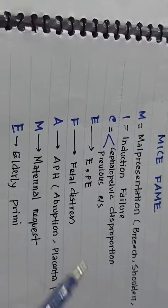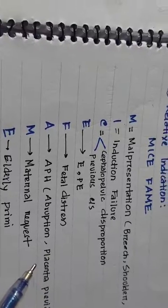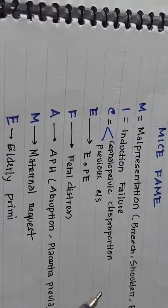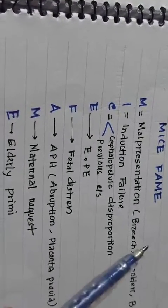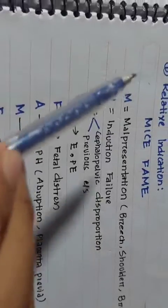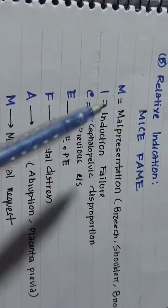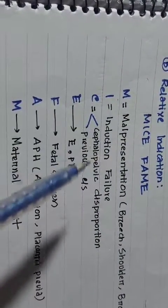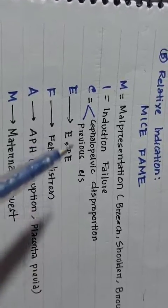A for antepartum hemorrhage — abruptio placenta or other types of placenta previa. M for maternal request, also called caesarean section on maternal request, which is nowadays very important. And E for elderly primigravida.